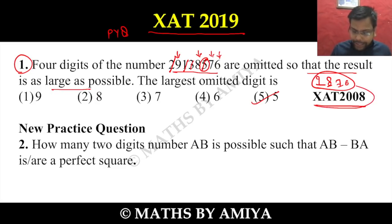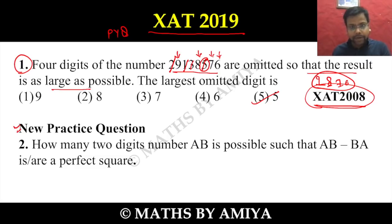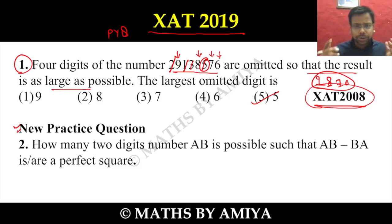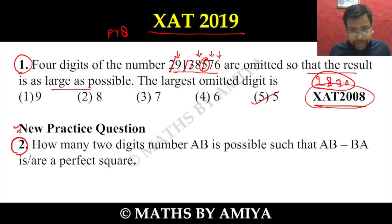That was the JAT 2008 question with explanation. Now it's time to solve the new question. We follow the same trend and try to keep around 20 questions per day to practice. Question number two: how many two-digit numbers AB are possible such that AB minus BA is a perfect square?